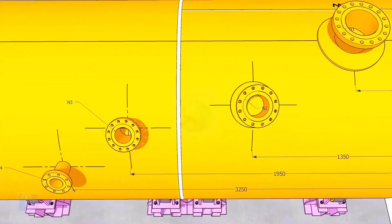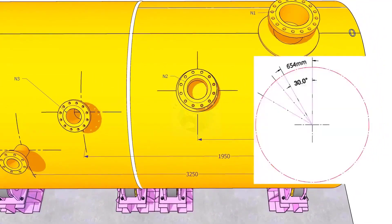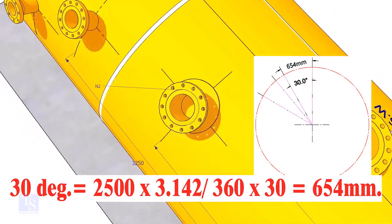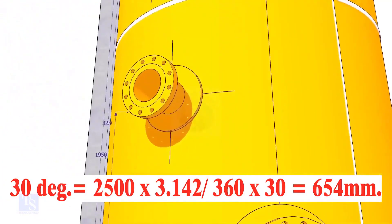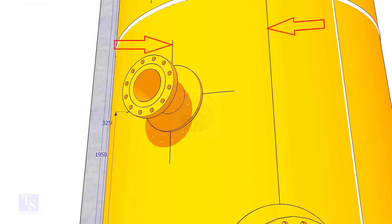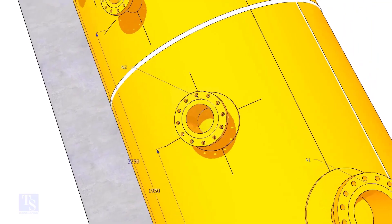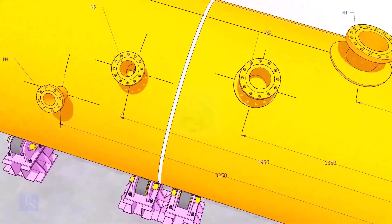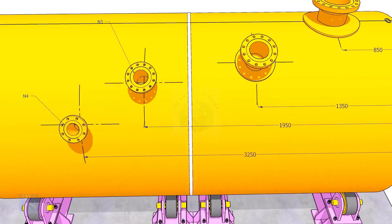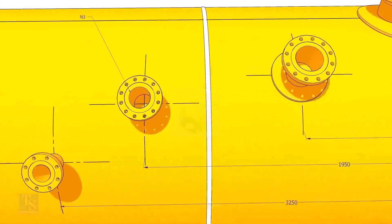Let us mark the center of nozzle N2. It comes on 30 degrees anti-clockwise. Convert 30 degrees to arc length. Mark this dimension at two locations as shown and draw a line. Draw an arc of 1350 millimeters from the edge of the shell, intersecting this line. This point is the center of nozzle N2.